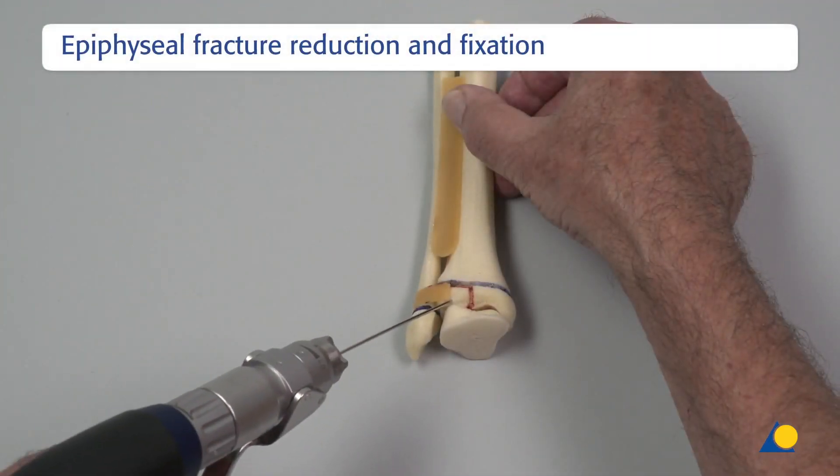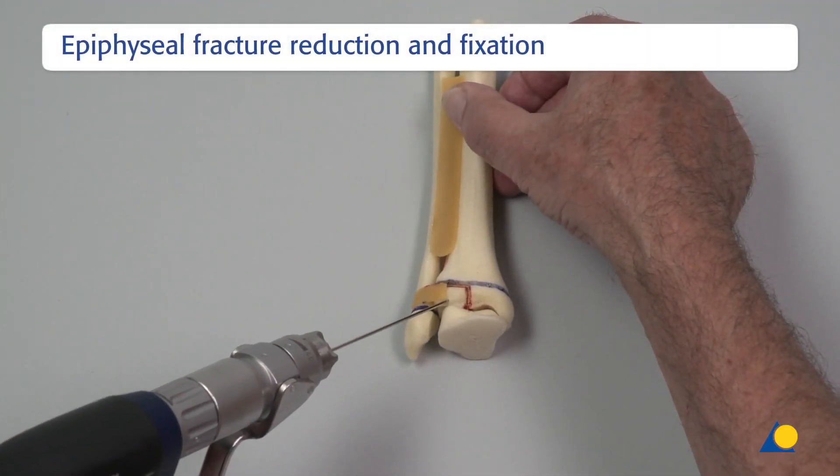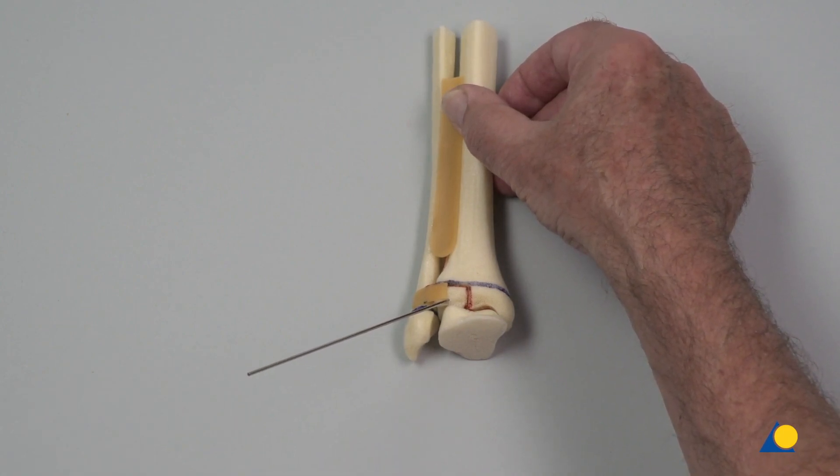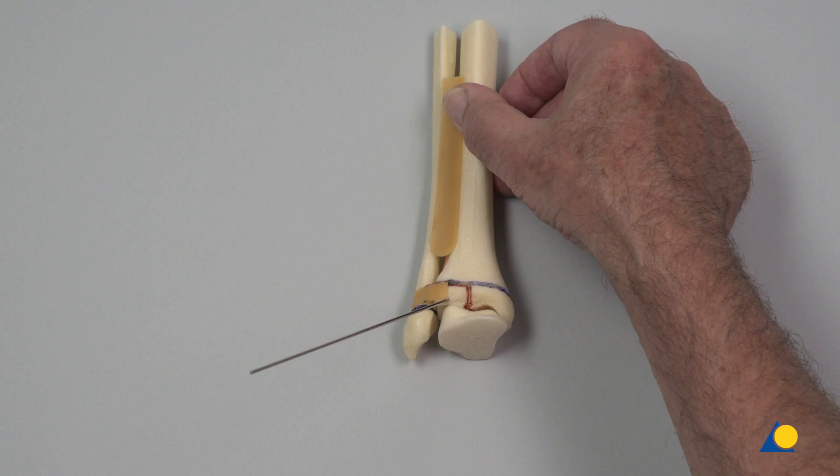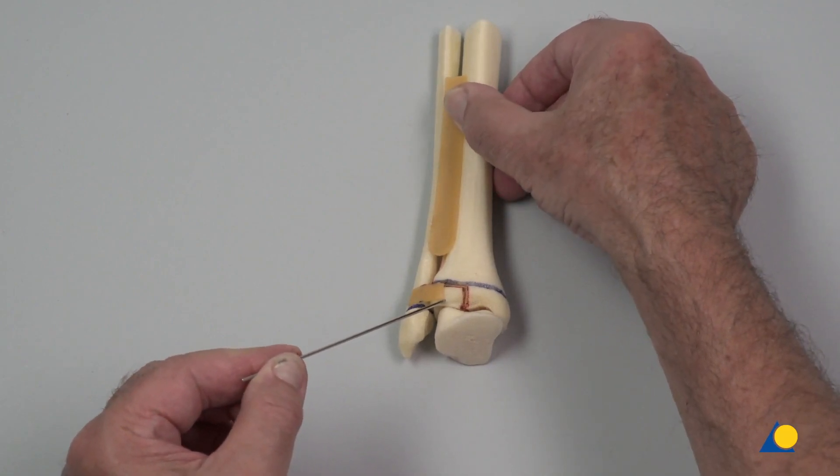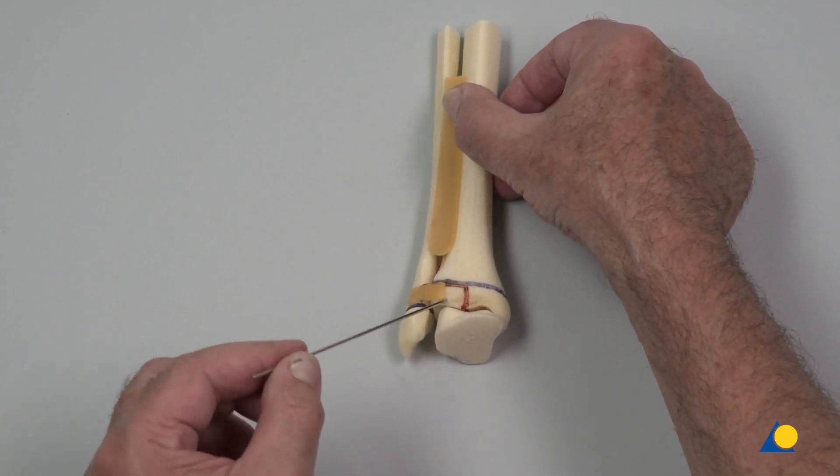Starting at the anterior lateral edge, directly above the insertion of the syndesmosis, a 1.6 mm non-threaded K wire is inserted. The K wire can be used as a joystick to manipulate the fragment for reduction.